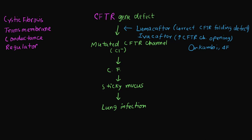The second group of drugs acts on the sticky mucus; they are known as mucolytics. One of the most common drugs is dornase alpha, also known as Pulmozyme. These drugs are given as a nebulizer and they break down the DNA of the mucus. These drugs are contraindicated in persons who are allergic to Chinese hamster ovary products.